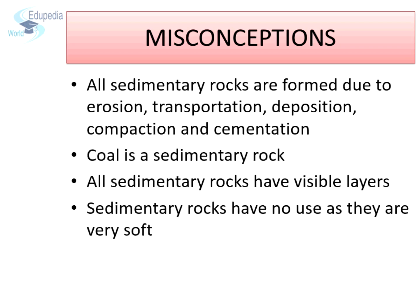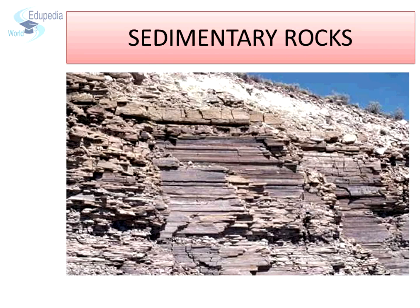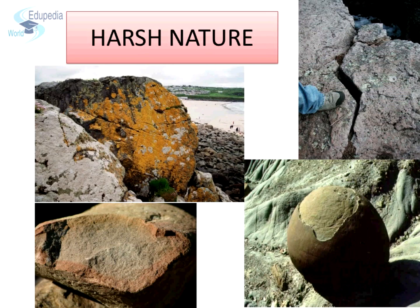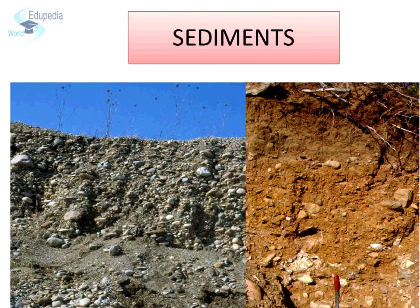Let us look at the facts. Once rocks are formed, they can be attacked by agents such as running water, wind, moving ice, waves, extremes of temperatures, atmospheric moisture, weak acids, and at times even plants and animals. As a result, rocks wear away. If the processes of wearing down are physical, rocks will be broken up into smaller pieces called clasts, or sediments, or regoliths.